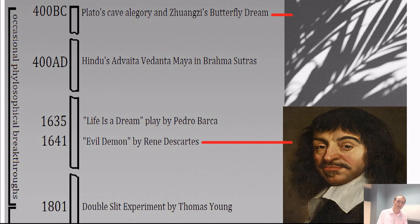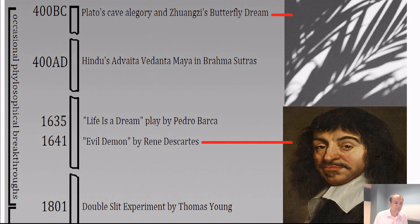René Descartes is a very important scientist and philosopher of those times, and his evil demon concept is very clear on the topic. Essentially, when he would dream and wake up, he would not fully understand whether his senses were real or not. He says that if my senses deceived me at least once, how can you trust them? That is, in my opinion, an amazing quote from René — it defines the issue very clearly in simple words. I highly encourage you to read his whole work on this. That is pretty much the long period of occasional philosophical breakthroughs on this subject.